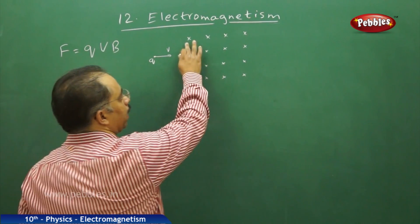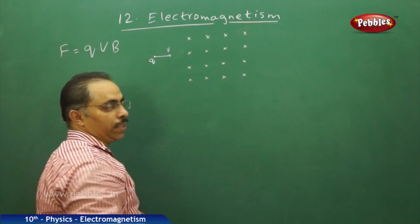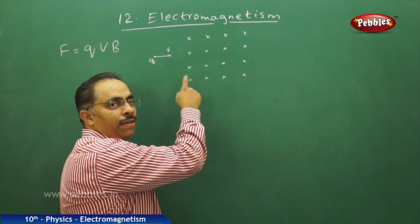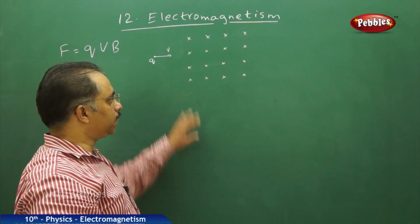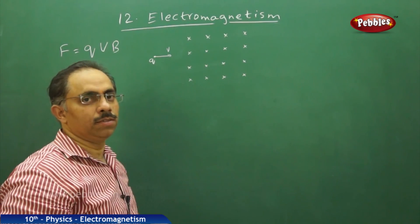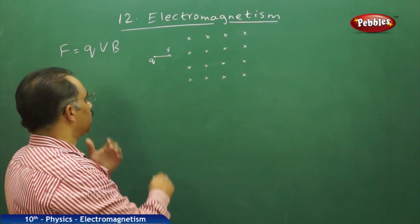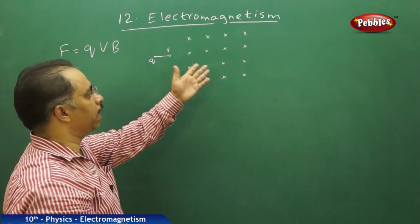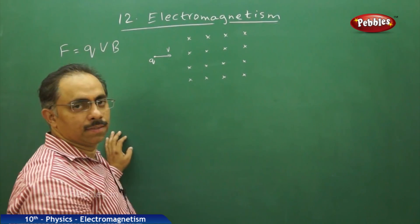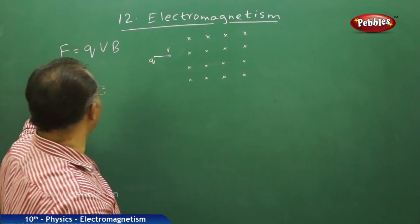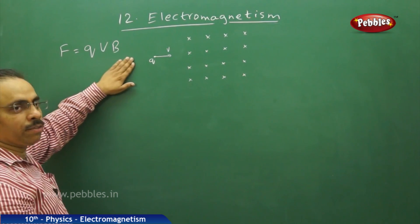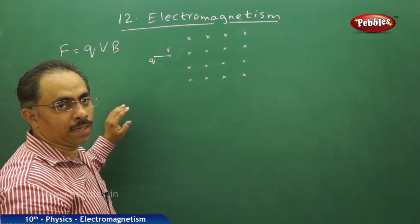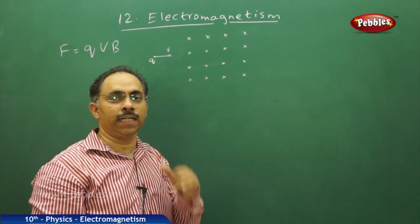We will assume that the magnetic field is going into the board. The crosses indicate that the direction of the magnetic field is going into the board, meaning it is perpendicular to the plane of the board. Now I am taking a charged particle Q and forcing it to pass through the magnetic field of induction B. To know the direction of the magnetic force on the charged particle moving in this magnetic field, we use the right-hand rule.